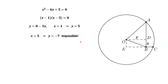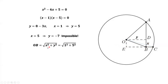Now we are ready to calculate the distance from point B to O. OB equals square root of X squared plus Y squared. From this right triangle OEB, OE squared plus EB squared, where OE equals X and EB equals Y. We have square root of X squared plus Y squared. Replace X by 1 and Y by 5, we have the final answer: square root of 26 is the final answer for OB.